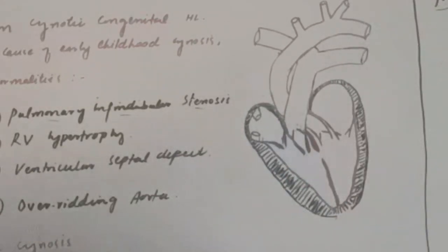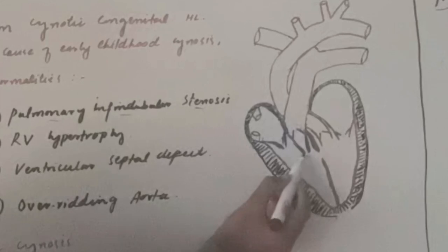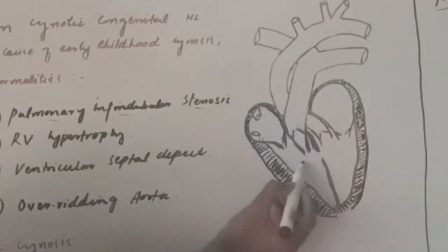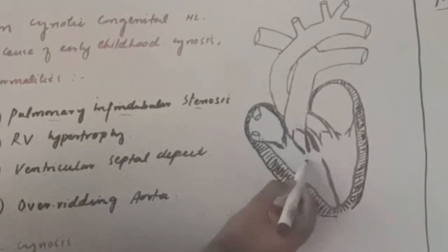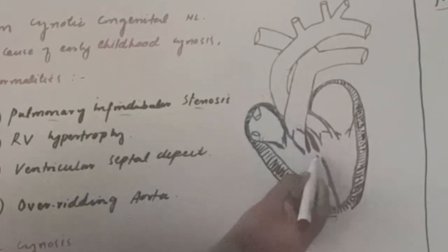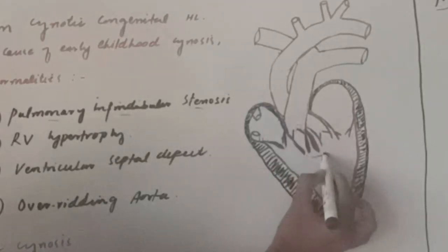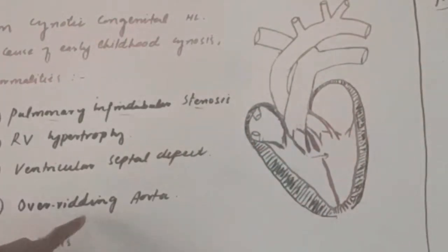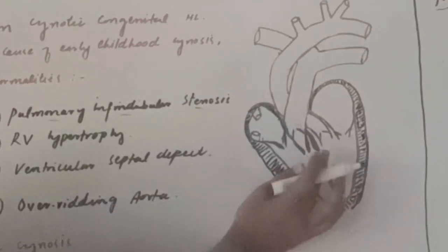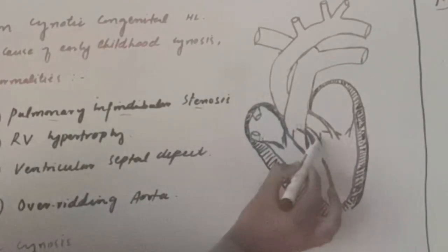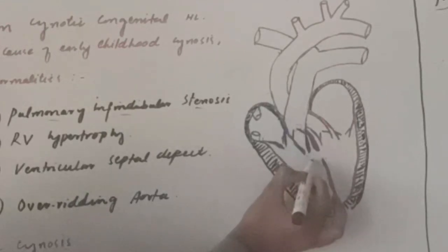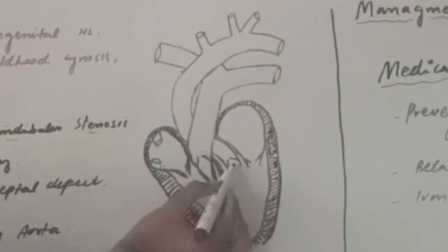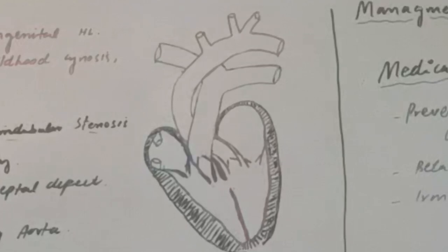When there is pulmonary stenosis and a VSD, due to increased resistance to blood flow from the right ventricle into the pulmonary artery, blood from the right ventricle flows into the left ventricle — this is called a right-to-left shunt. The fourth abnormality is the overriding aorta. In this case, the aorta arises nearly from the ventricular septal defect, so most of the blood from the right ventricle goes through this aortic opening into the aorta.